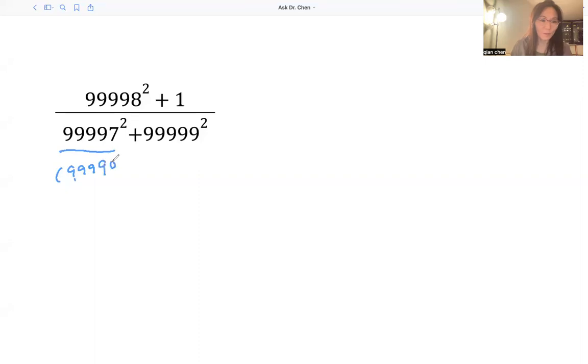So four 9's followed by 8 minus 1 squared, and then 99999 can be written as 99998 plus 1 squared. And we know those two perfect squares have relations.